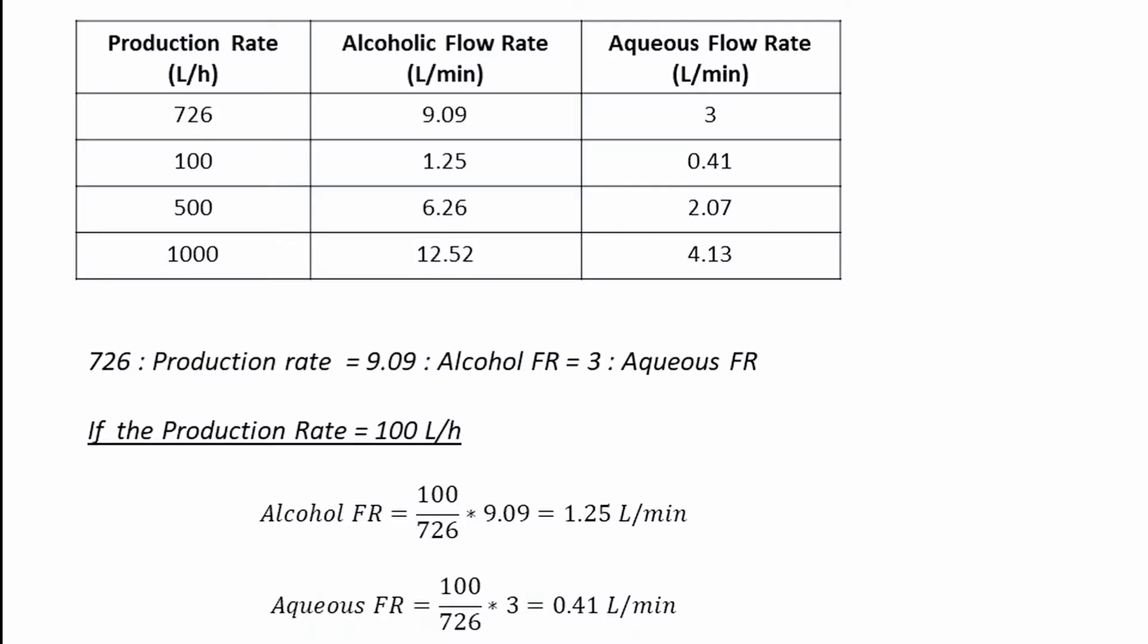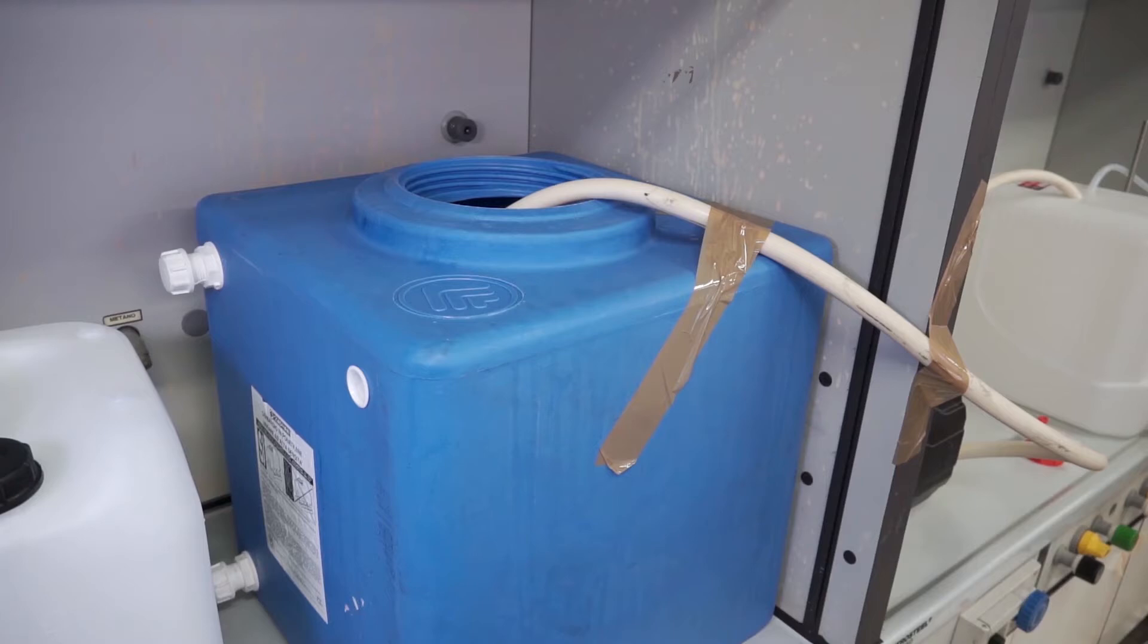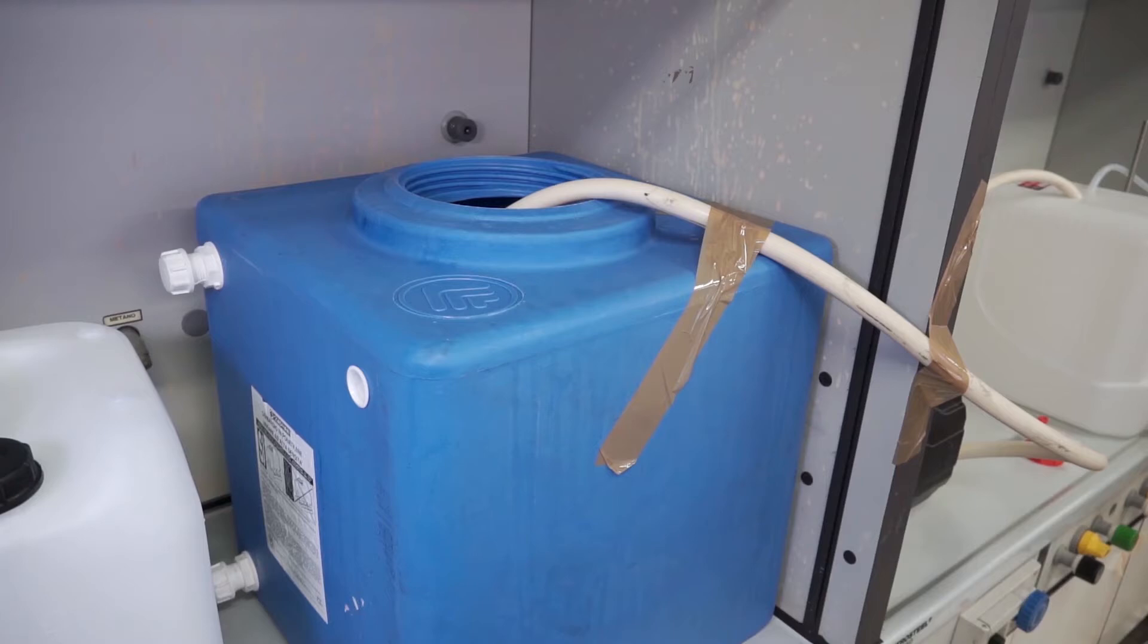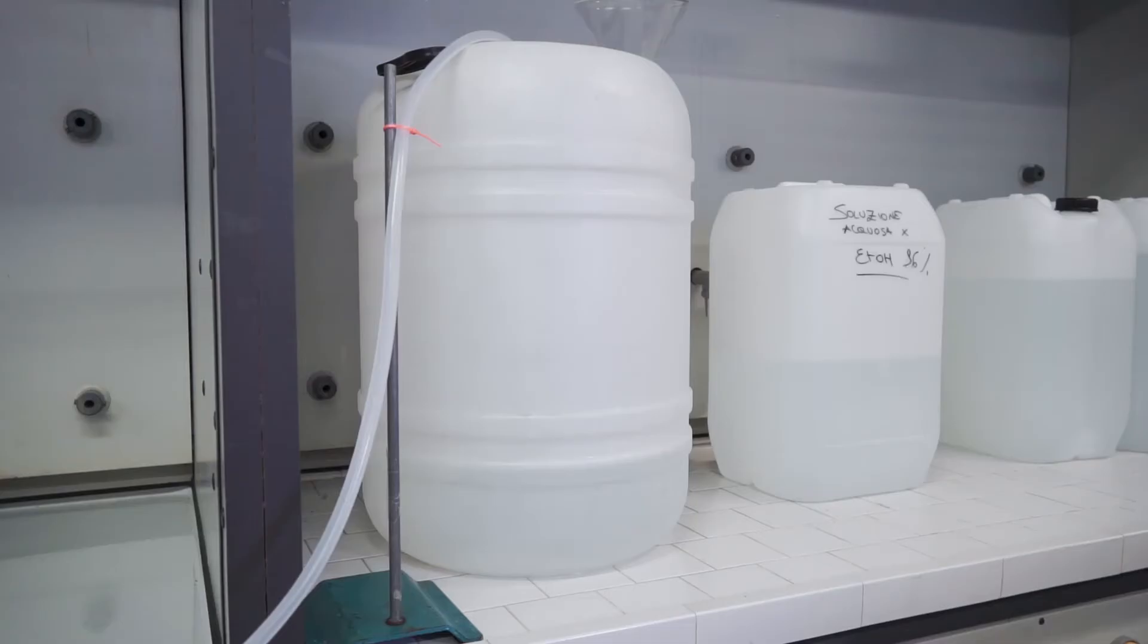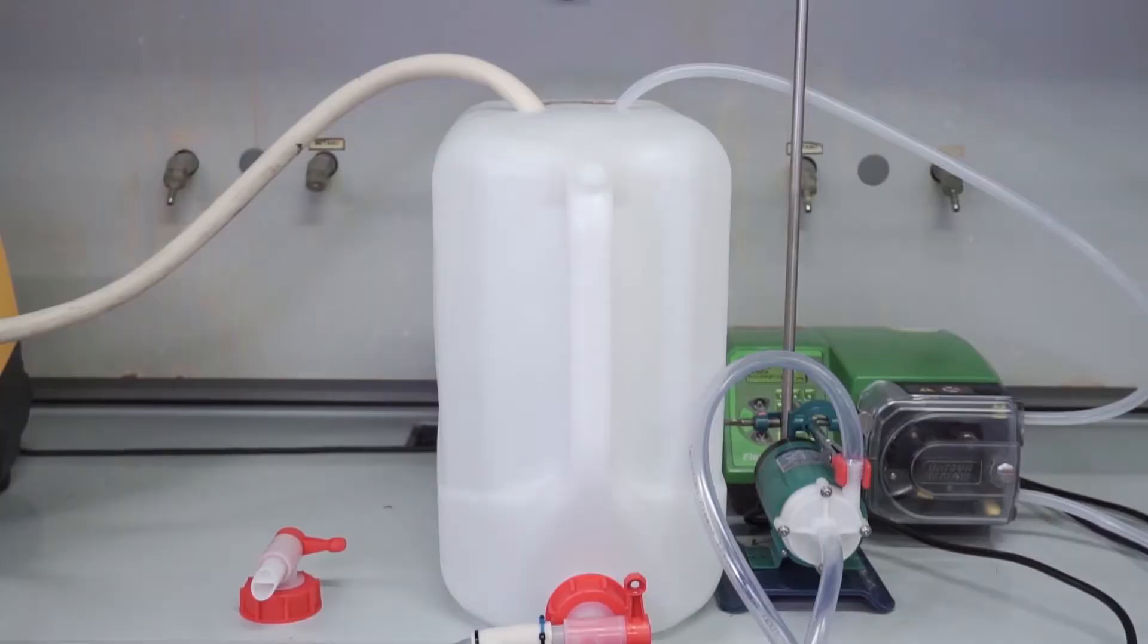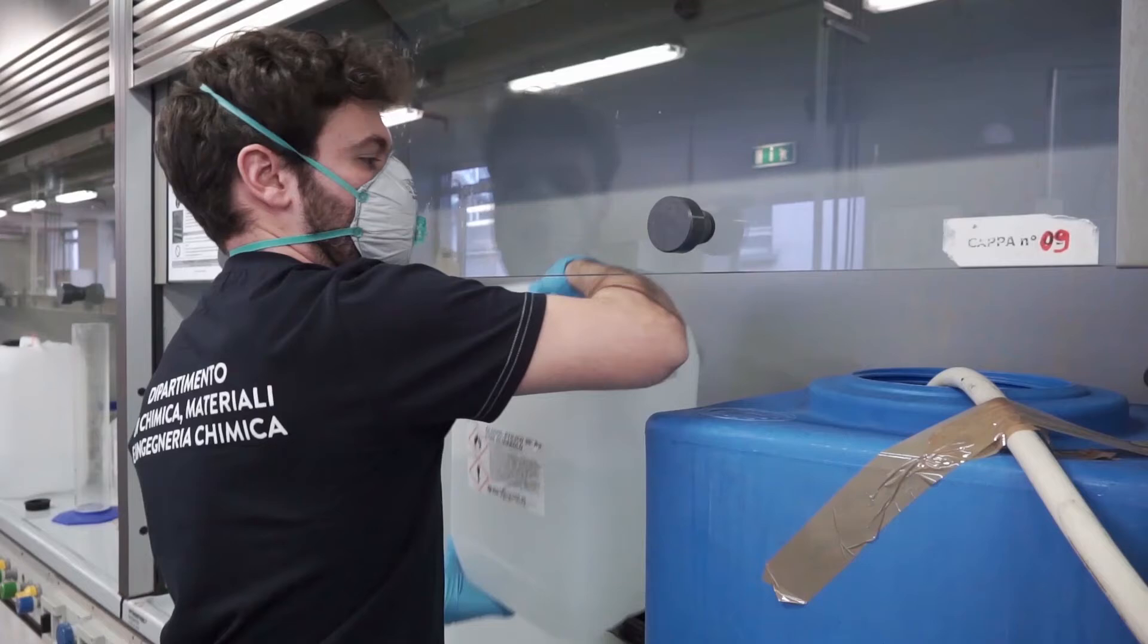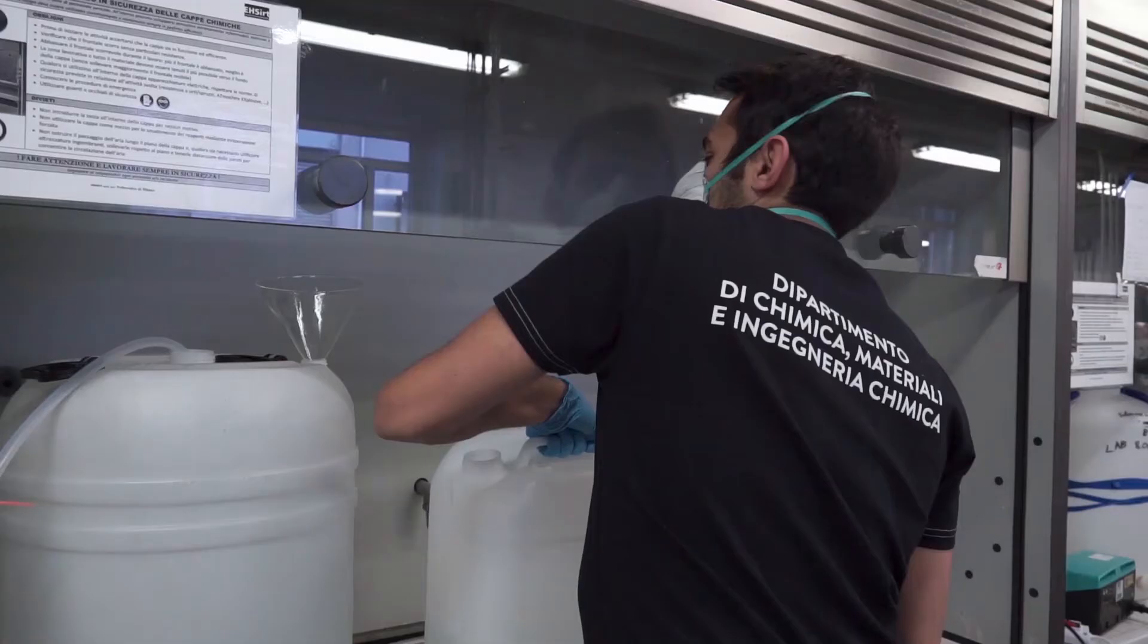To vary the final productivity, it is sufficient to modify the flows according to the formula shown in the attached document. Specifically in this case, the productivity is equal to 726 liters per hour. It is recommended to use a tank for the alcoholic solution of at least 100 liters, which has to be placed away from power sockets or sparks, for the aqueous solution of at least 50 liters, and a mixing tank of at least 30 liters. In particular, the tank for the alcohol solution must be filled with 96% volume per volume ethanol and placed under the hood.